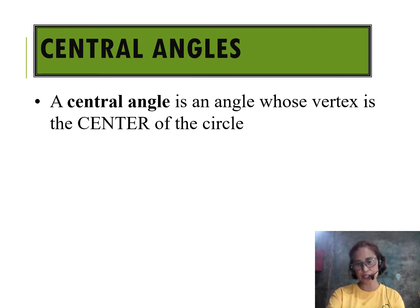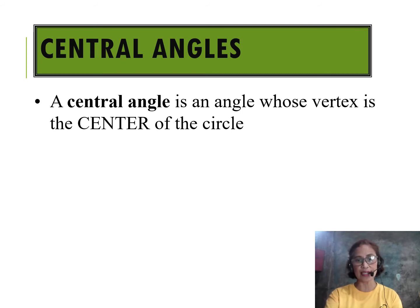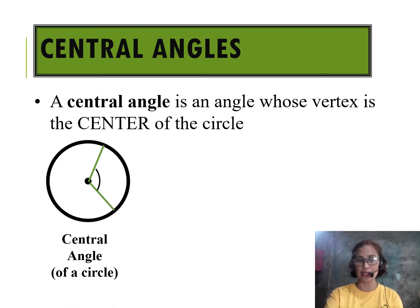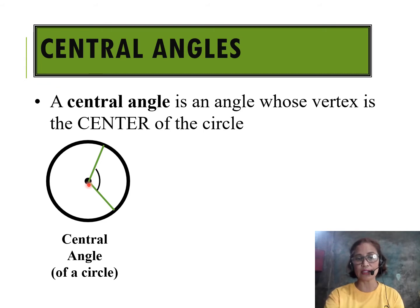Let us first visualize what a central angle is. A central angle is an angle whose vertex is at the center of the circle. Here's an example of a central angle. If you notice, it is formed by a radius here and another radius, and they meet at the center. An angle is formed and the vertex is at the center, therefore this qualifies as a central angle.